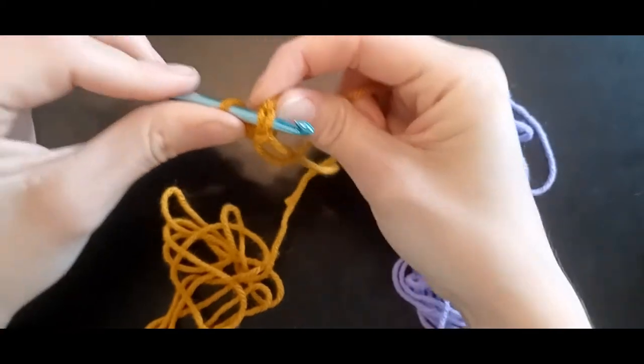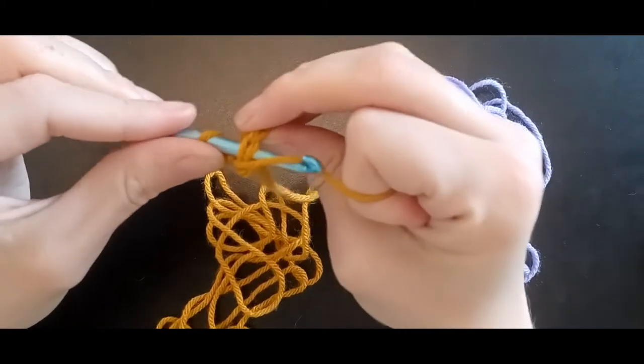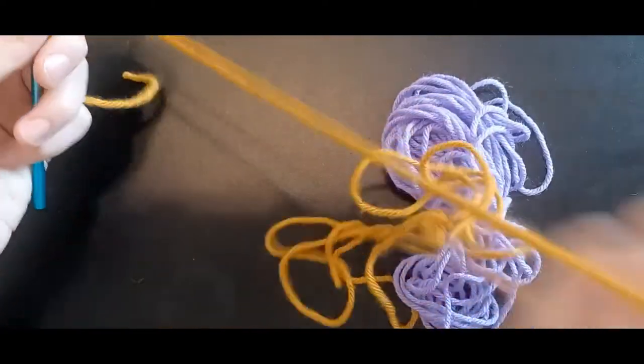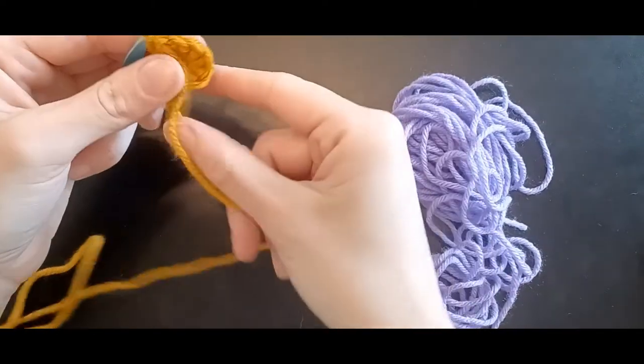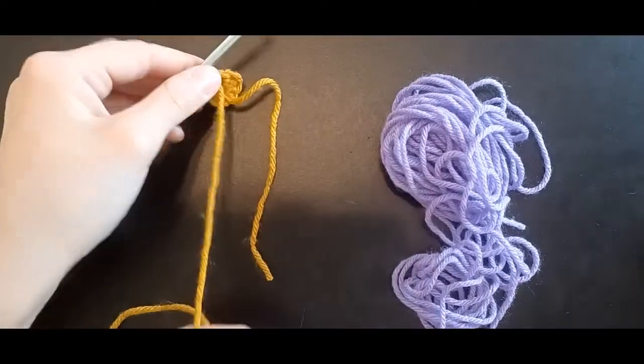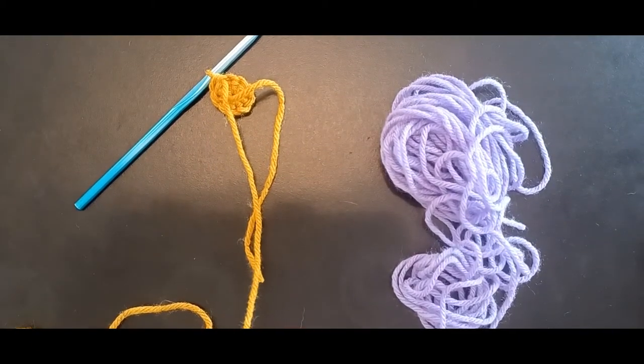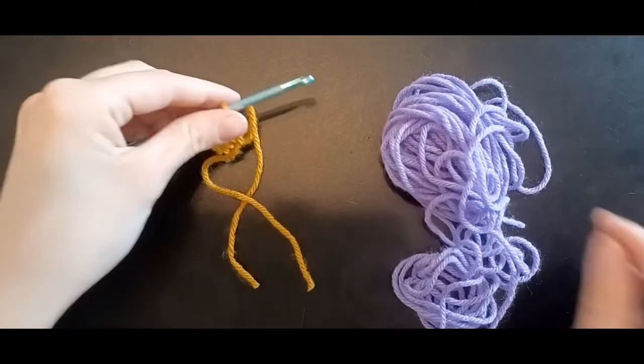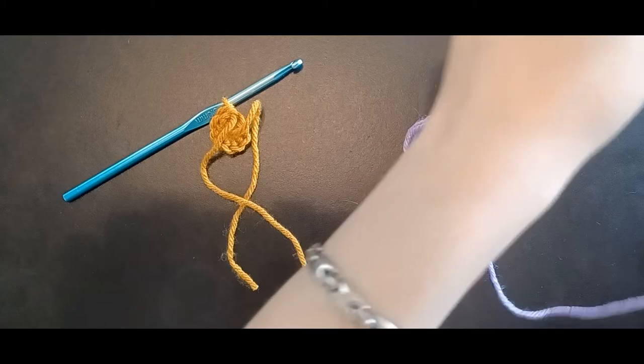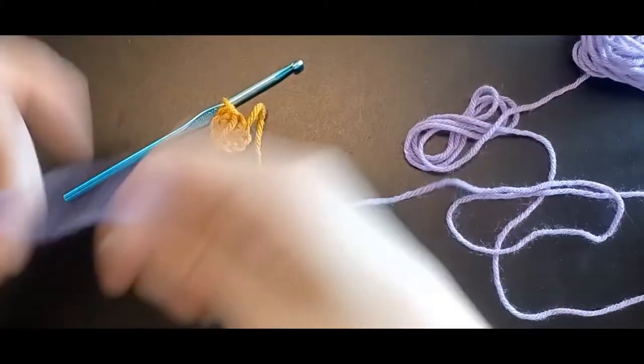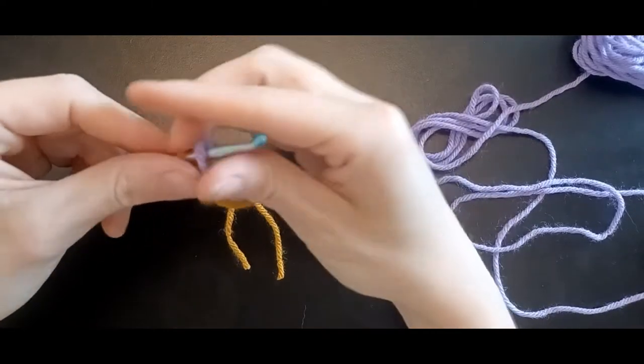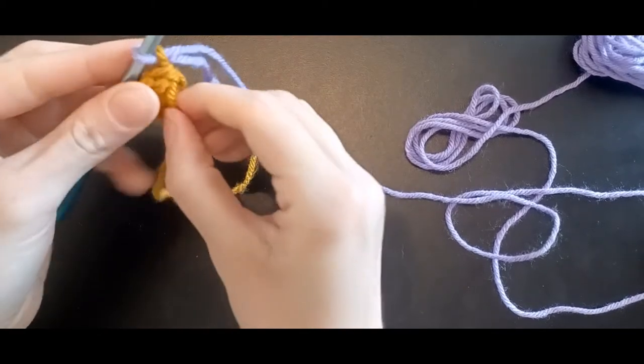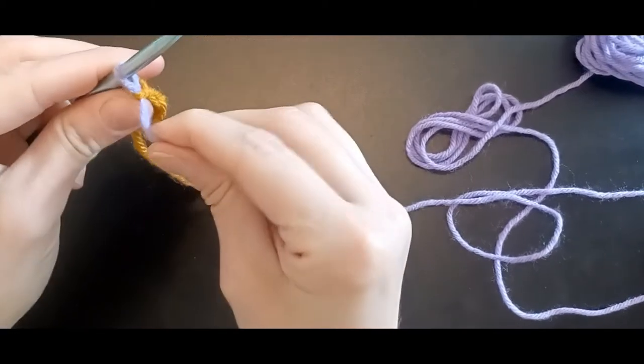Now you're done with your center color, so you can slip in, pull that off. Bring in your petal color, pull that off, over and pull through. Open tight. Now chain two.